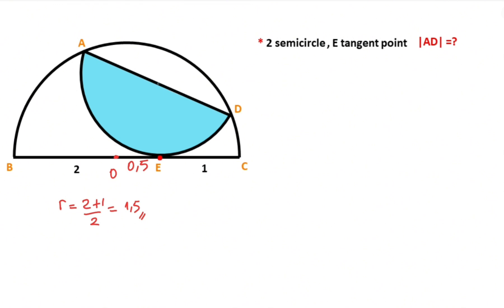Now let's determine the center of the blue semicircle. Let's call it point M. If we connect these two points, the angle here must be equal to 90 degrees, because point E is given as a tangent point. These three parts are also radii.